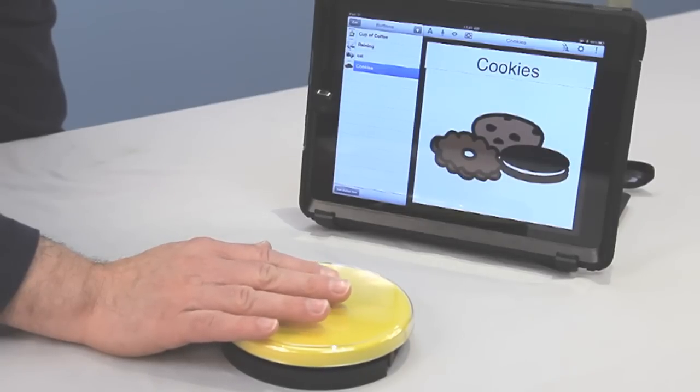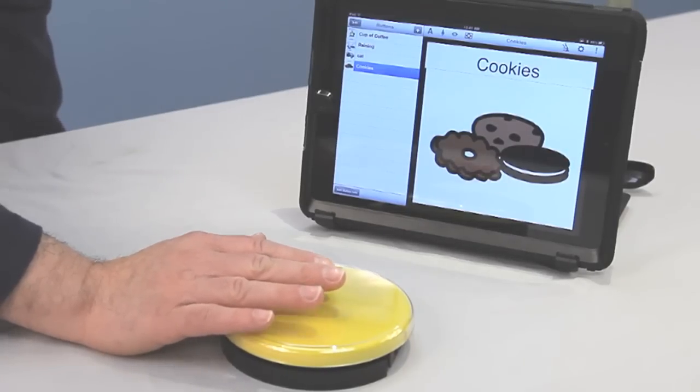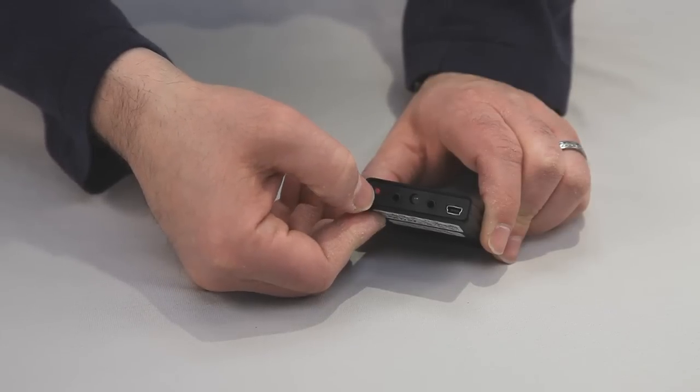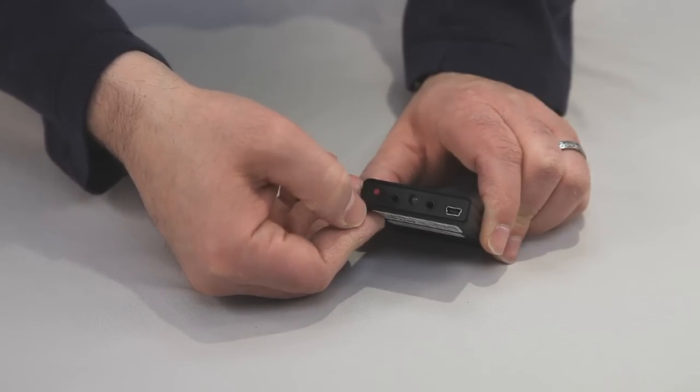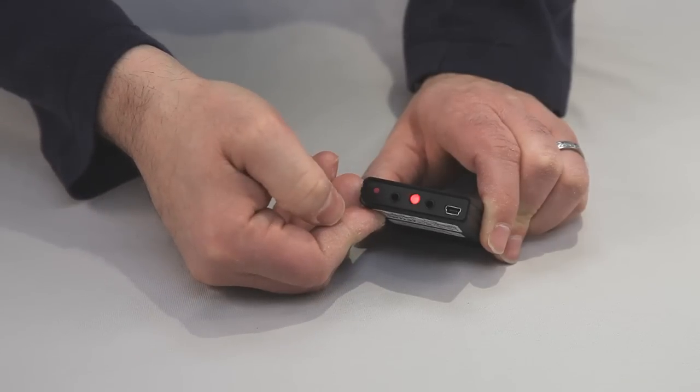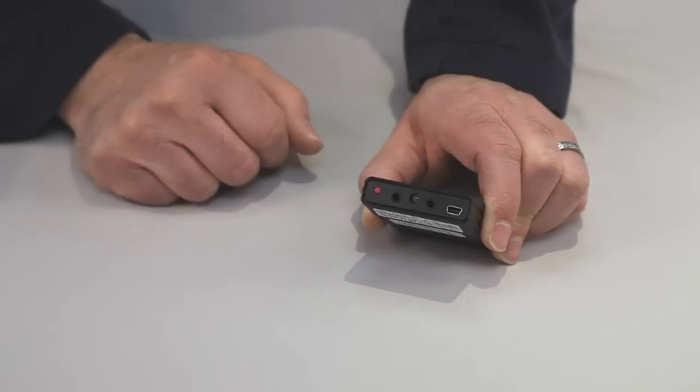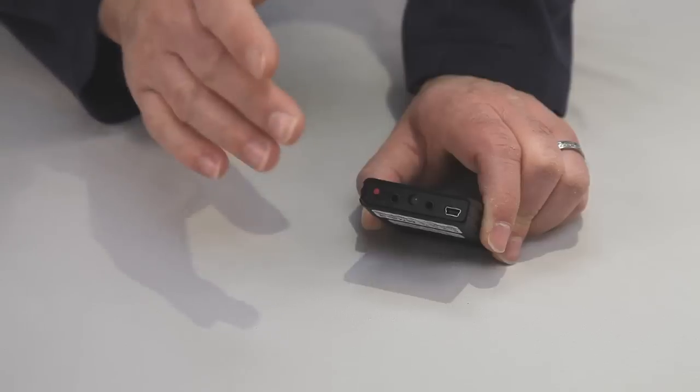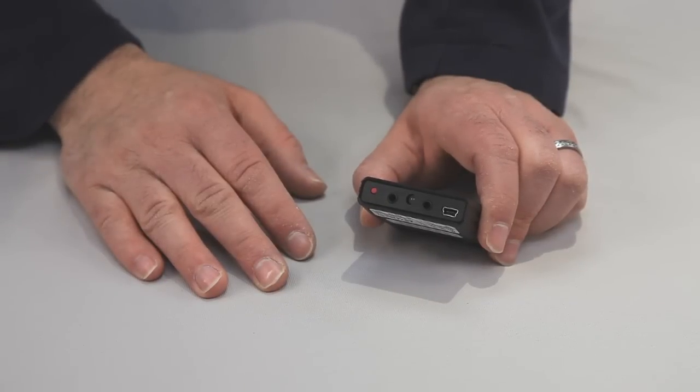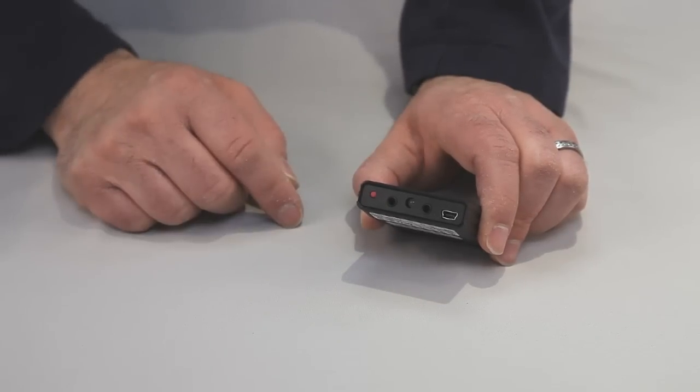When you finish using the interface, you want to power it down. So what you want to do is just hold this red power button down until the light turns red, starts flashing, and you can let it go. And it'll flash a couple of times and then shut off completely. If you don't, it's going to drain the battery down. The next time you go to use it, you'll have to wait a couple hours to recharge it. So very important, make sure you power down the units when you're done with them.